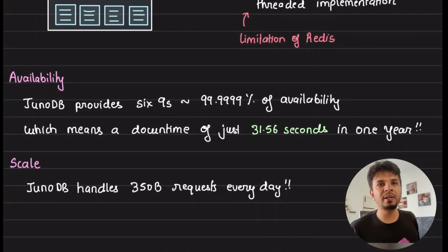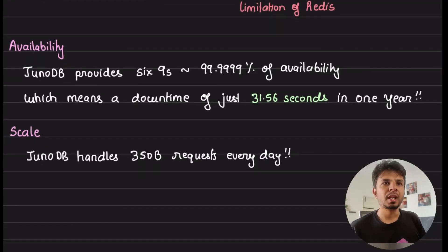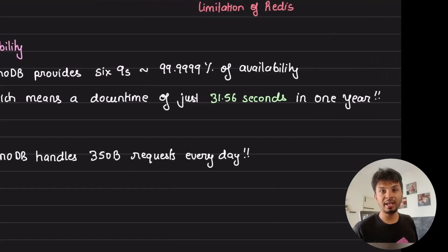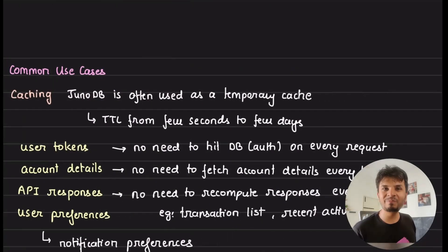Now let's jump into the availability part of it. Few numbers that they mentioned on the repo: JunoDB provides six nines of availability for PayPal. That's insanely high. Six nines of availability implies 31.56 seconds of downtime every year and that's pretty sharp. And it handles 350 billion requests every day for them. Pretty huge load.